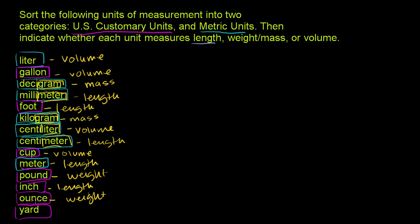If it was written fluid ounce, then we'd be talking about one sixteenth of a pint, and then it would be a unit of volume. But since it's just ounce, it's a unit of weight. One sixteenth of a pound. And then finally, a yard is a unit of length. And we are done.